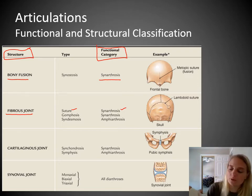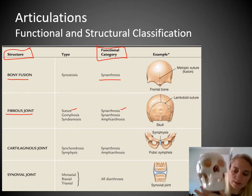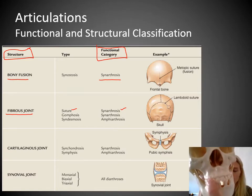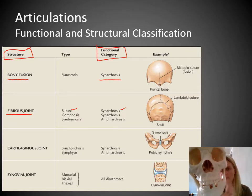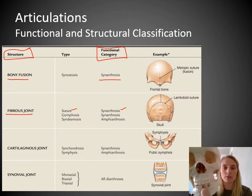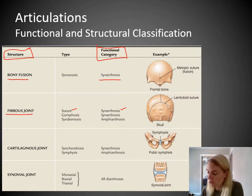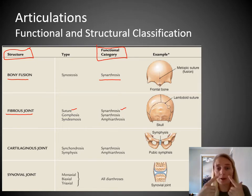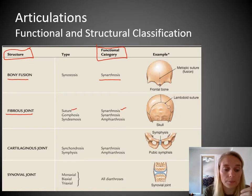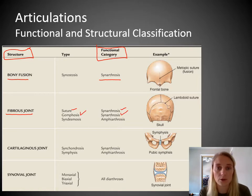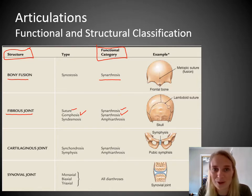Another example of synarthrosis is called a gomphosis. It is the joint of your teeth and your jaw bones. The gomphosis is a specific type of joint — very specific — of your teeth into your jaw bones. It is fibrous because there's a little periodontal ligament that separates the actual tooth from the jaw bone. Gomphosis is also synarthrotic — there's no movement. We do not want our teeth to be moving.